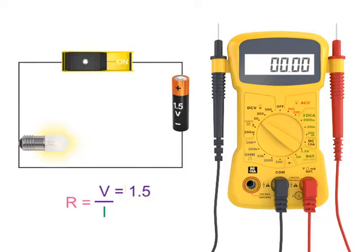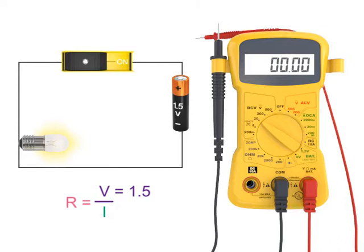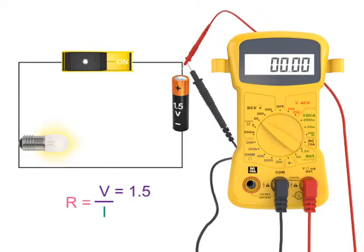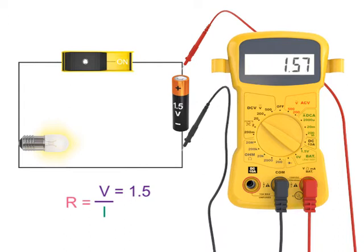After visually inspecting the terminals of the battery to determine the polarity of the battery, place the red probe across the wire on the positive side of the battery and the black probe across the negative side. You should get a reading of around 1.5 volts. The voltage of the battery is 1.57 volts, and about what we would expect.